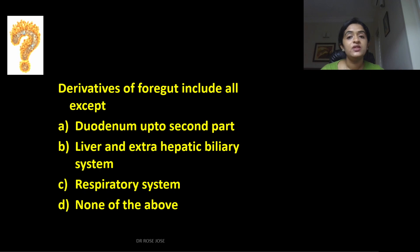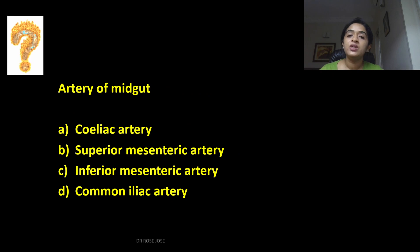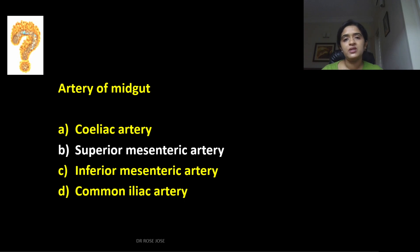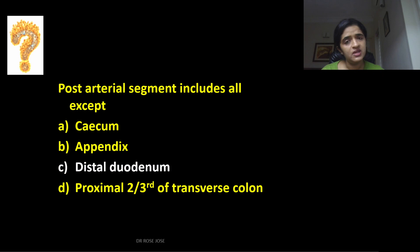MCQ review: derivatives of foregut include all except — the answer is none of the above, since duodenum up to the second part, liver, extrahepatic biliary apparatus, and respiratory system are all foregut derivatives. The artery of the midgut is the superior mesenteric artery; the celiac artery is for the foregut and the inferior mesenteric artery is for the hindgut. Post-arterial segment includes all except — the answer is distal duodenum, which is a part of the pre-arterial segment.